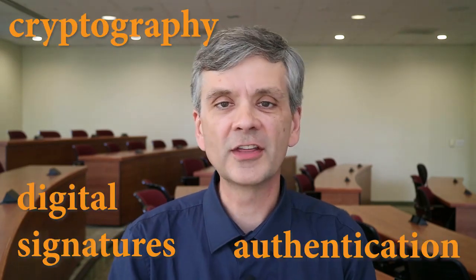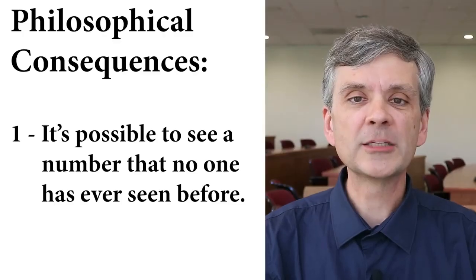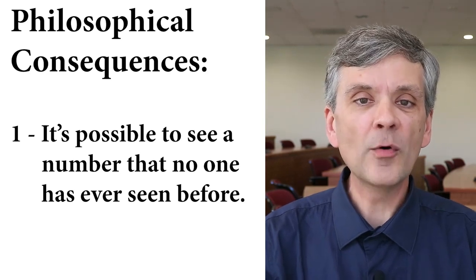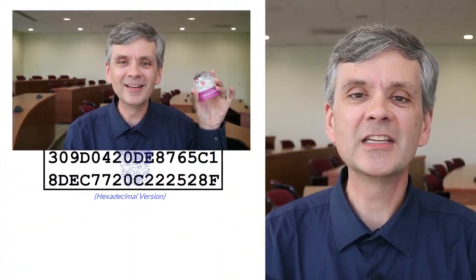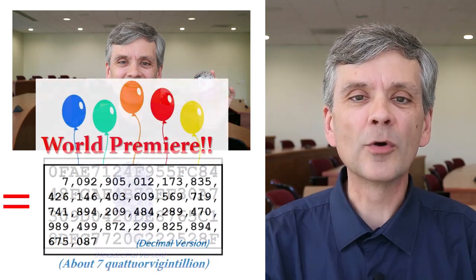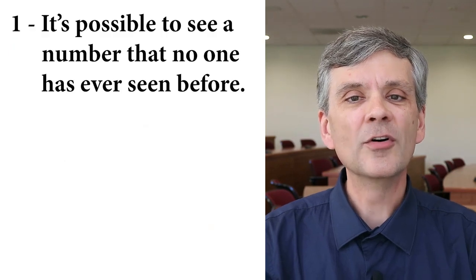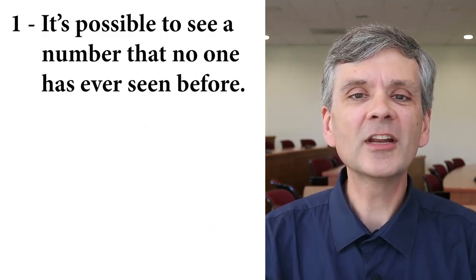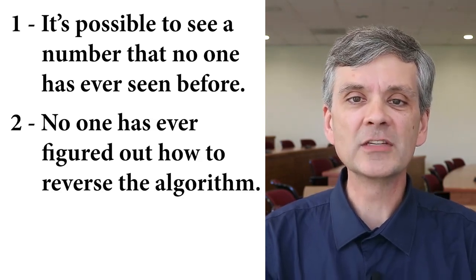These properties make SHA-256 useful for all kinds of applications: cryptography, digital signatures, authentication. And there's Bitcoin — more in a minute. Beyond the usefulness of this algorithm, I think some of the philosophical consequences are amazing to think about. It's possible for you to see a number that literally no one else in human history has ever seen before. All you have to do is take a picture with some randomness in it and then calculate the SHA-256 hash. So here's the world premiere of this number that I just made from that picture — it's never been seen before. Here's a mathematical function that anyone can do on their computer, but no one has any idea how to do the reverse of this function.